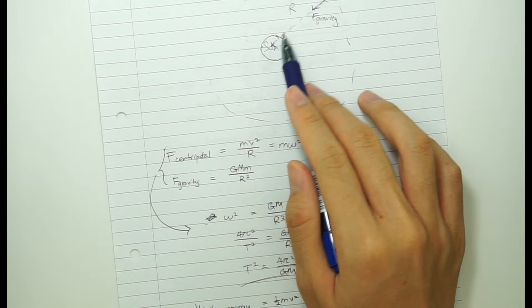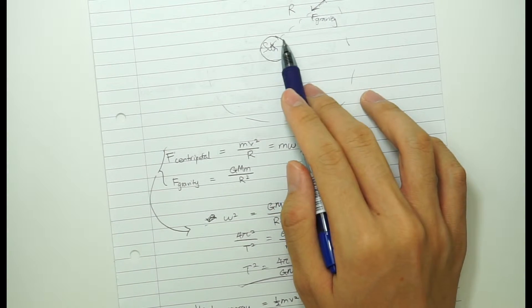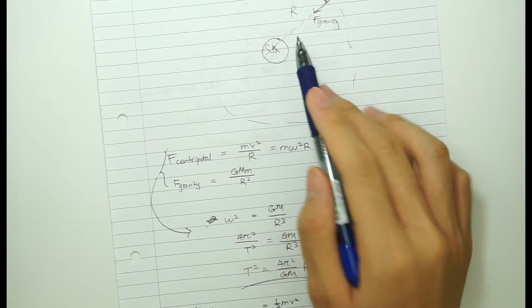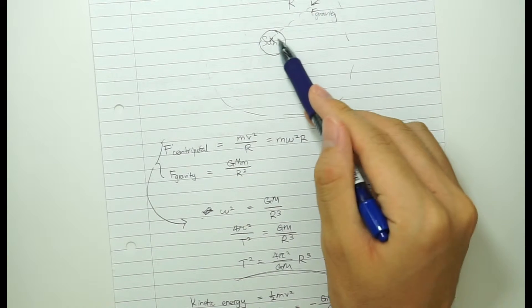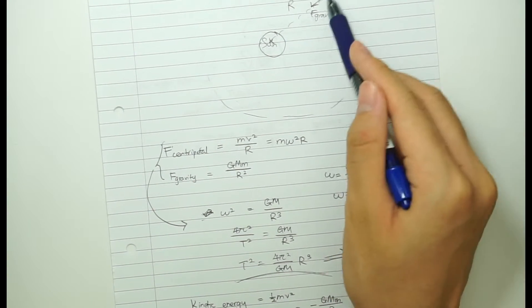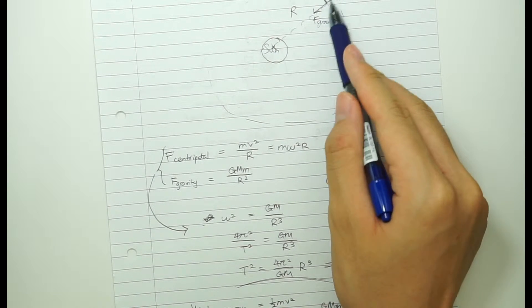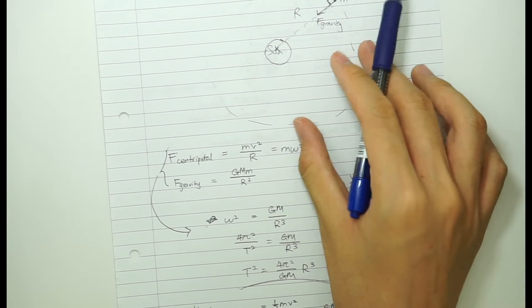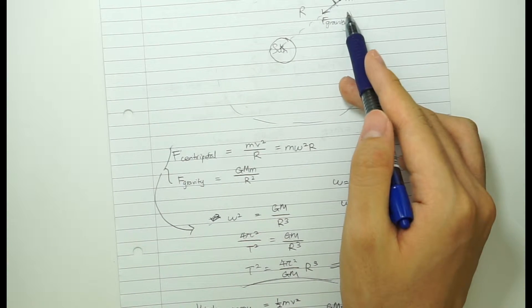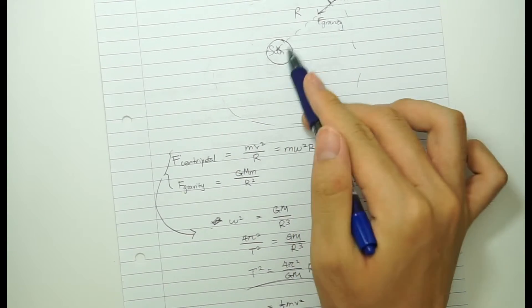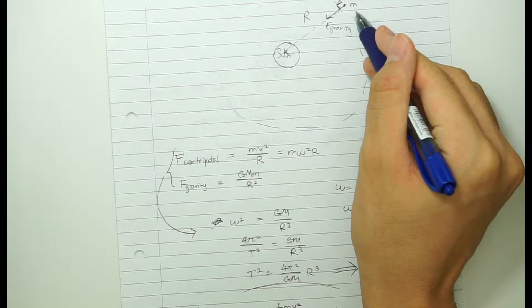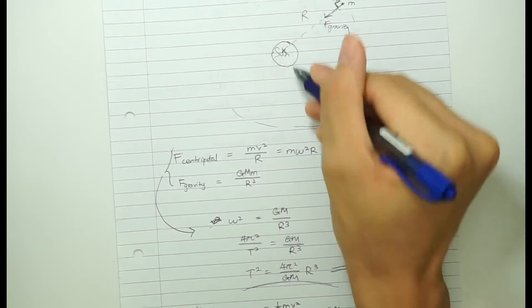So basically, for example, if we were to use the Earth-Sun model, we'll model the Sun as this ball of mass. But we can treat it as a point mass because the Sun is roughly spherical. And also there's a radius r which stands for the radius of the orbit of the Earth around the Sun. However, Earth has mass small m, Sun has mass big M.